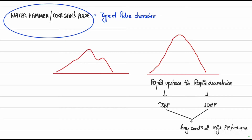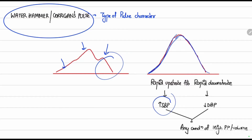Normally, there is initially a percussion wave followed by a tidal wave, then a dicrotic notch followed by a diastolic runoff. But in water hammer pulse, there is an initial rapid upstroke followed by a rapid downstroke — no three parts of a wave. This rapid upstroke occurs due to increased cardiac output leading to high systolic blood pressure, and the rapid downstroke is due to increased peripheral vascular resistance leading to decreased diastolic blood pressure.